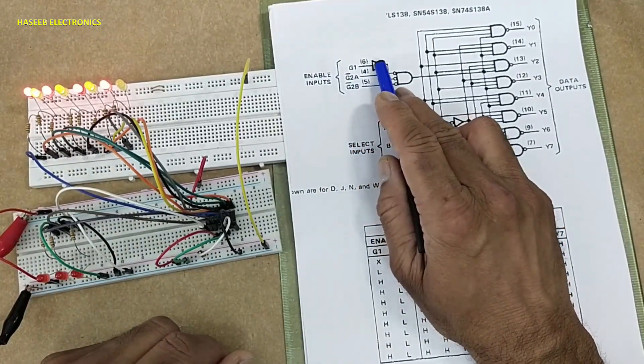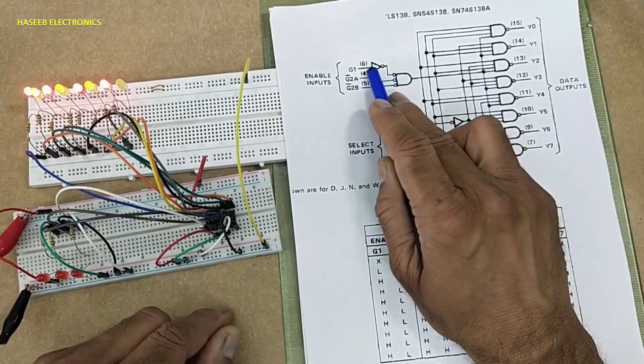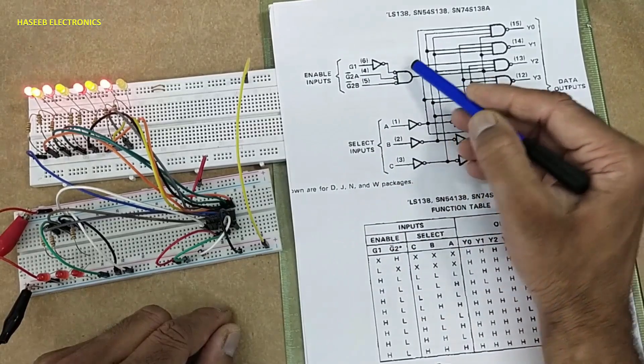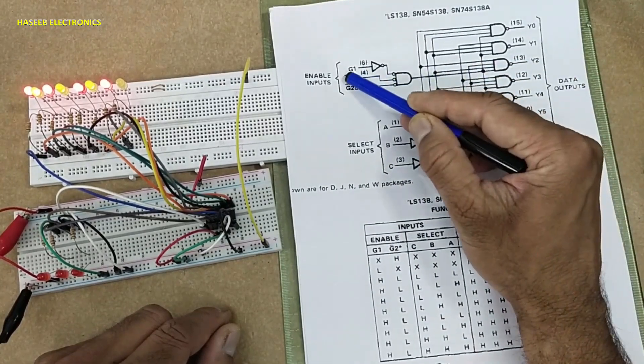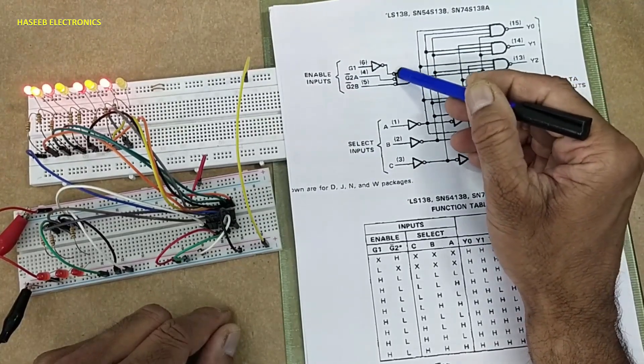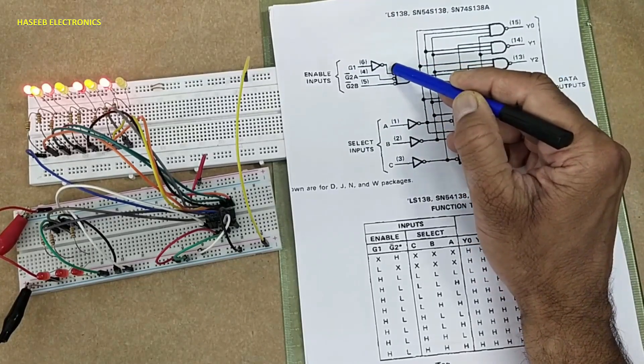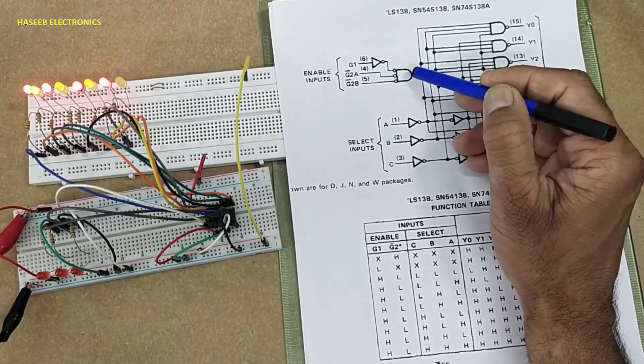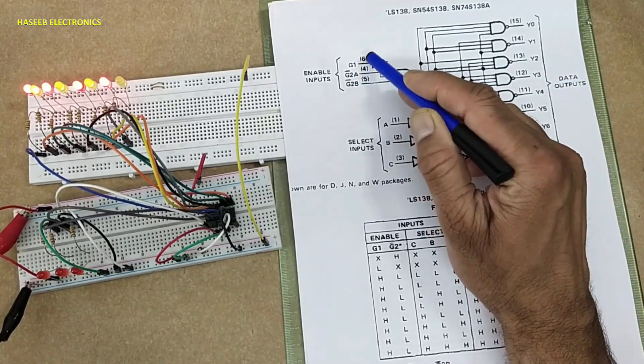Then G1, that is pin number six, must be high because it is using two inverters. If you apply low here, it will become high, then AND function. This will allow when these two inputs are low and one is high.